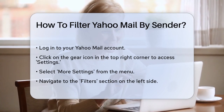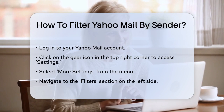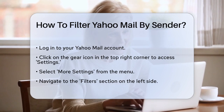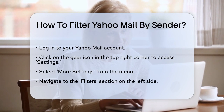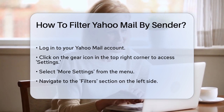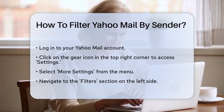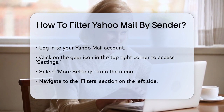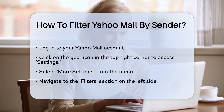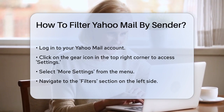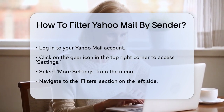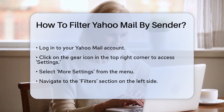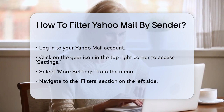To start, you need to log in to your Yahoo Mail account. Once you're in, look for the gear icon at the top right corner of the screen and click on it. This will open the Settings menu. From here, select More Settings.